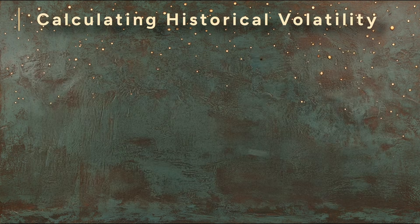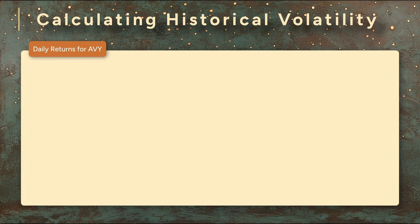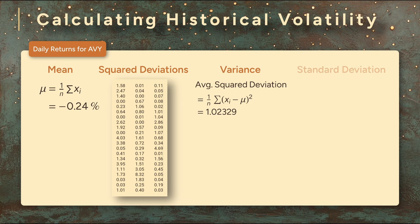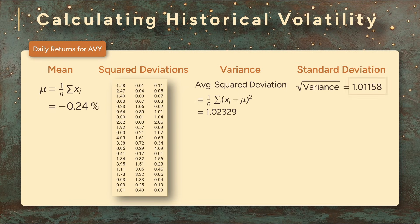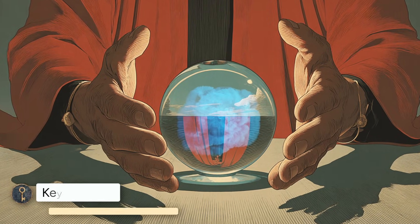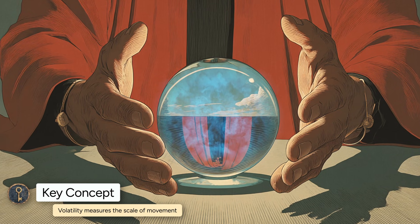Let's see what this looks like with real numbers. Suppose we have daily returns for one stock. Step one: find the average return — that's our mean. Step two: for each day, subtract that mean and square the difference. Step three: average all those squared differences — that's the variance. Step four: take the square root. That's the standard deviation, or the daily volatility. That tells us that on a typical day, the return wanders about 1% away from the average. It doesn't mean we can predict whether tomorrow will be up or down. It just tells us the scale of the movement we should expect. That's what we mean by volatility.